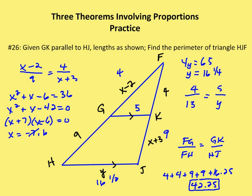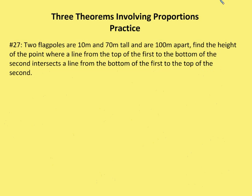Let's move on to problem number 27. Two flagpoles are 10 meters and 70 meters tall and are 100 meters apart. We want to find the height of the point where a line from the top of the first to the bottom of the second intersects a line from the bottom of the first to the top of the second. In geometry, one of the most difficult parts is interpreting the question and drawing the diagram.